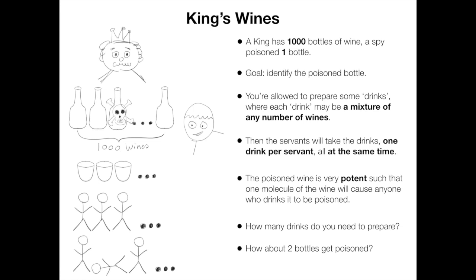A more difficult question is how about two bottles get poisoned? So let me start with the simple case where only one bottle gets poisoned. I'm sure you all get the answer, but let me just show you my solution so that we are at the same stage of notations.